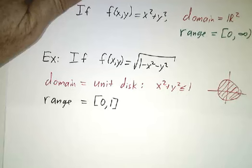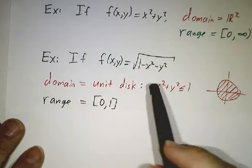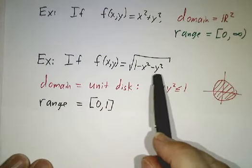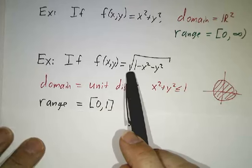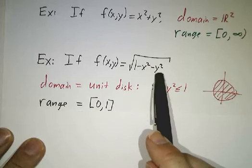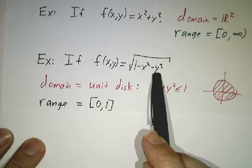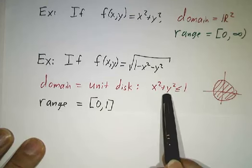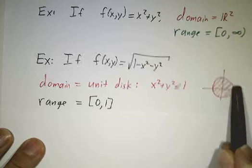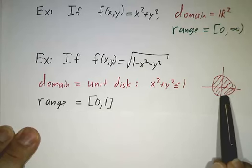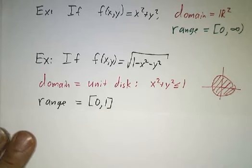Or if we had a function, square root of 1 minus x squared minus y squared, then we say, we're taking a square root, so the thing we're square rooting better not be negative. So x squared plus y squared has to be at most 1. So the domain is the unit disk. It's everything inside the unit circle. And the range is 0 to 1.